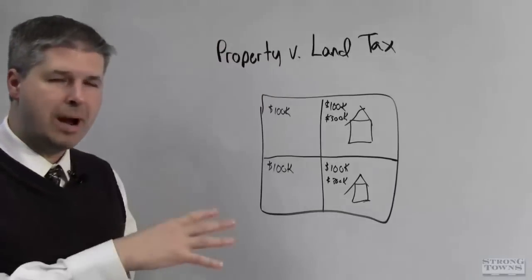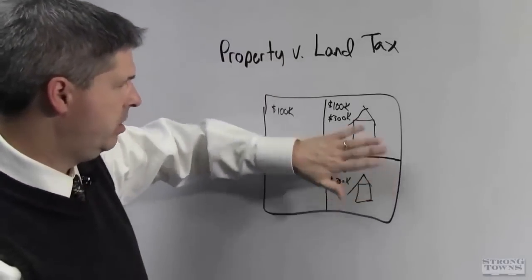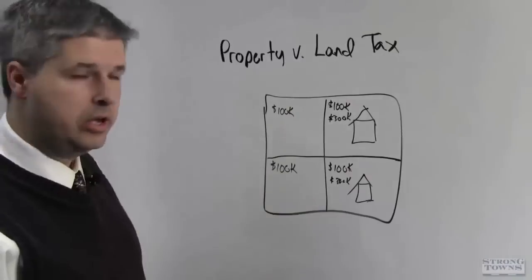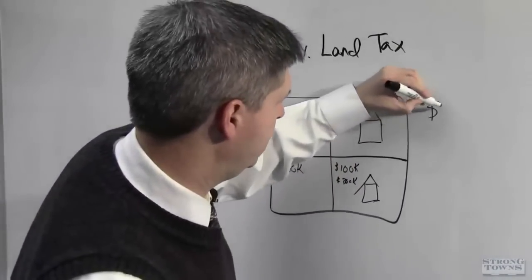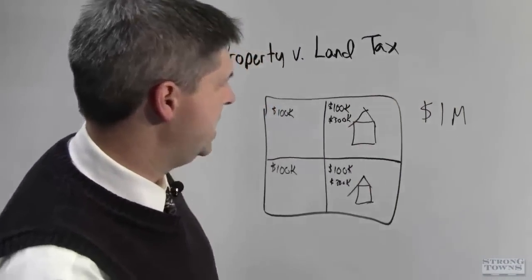In a current property tax system, this property here is $400,000, $400,000, $100,000. You have $1,000,000 worth of value in the property tax system.